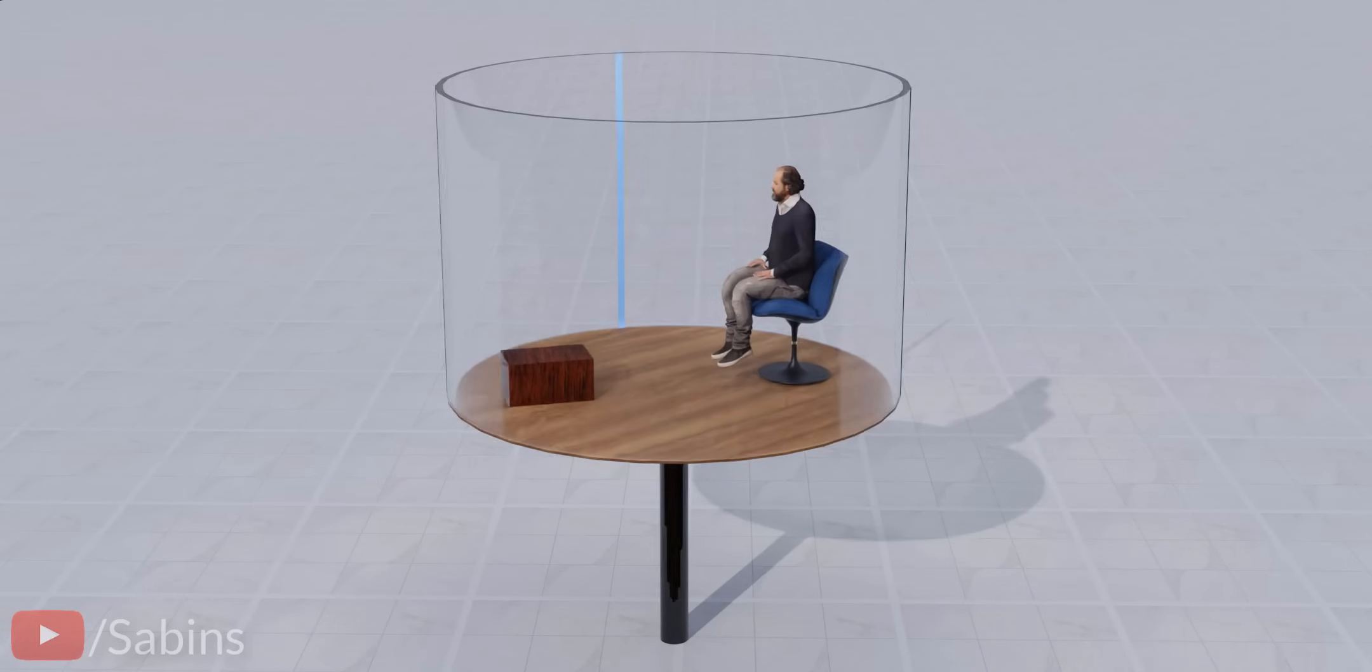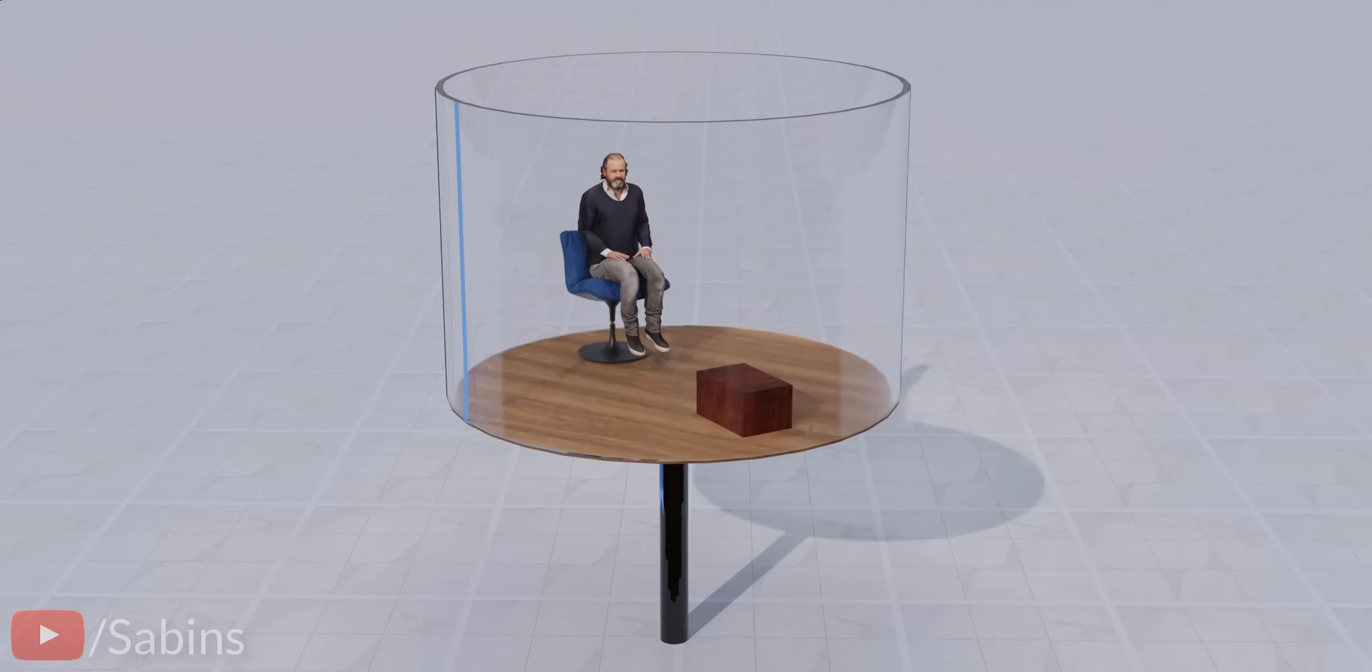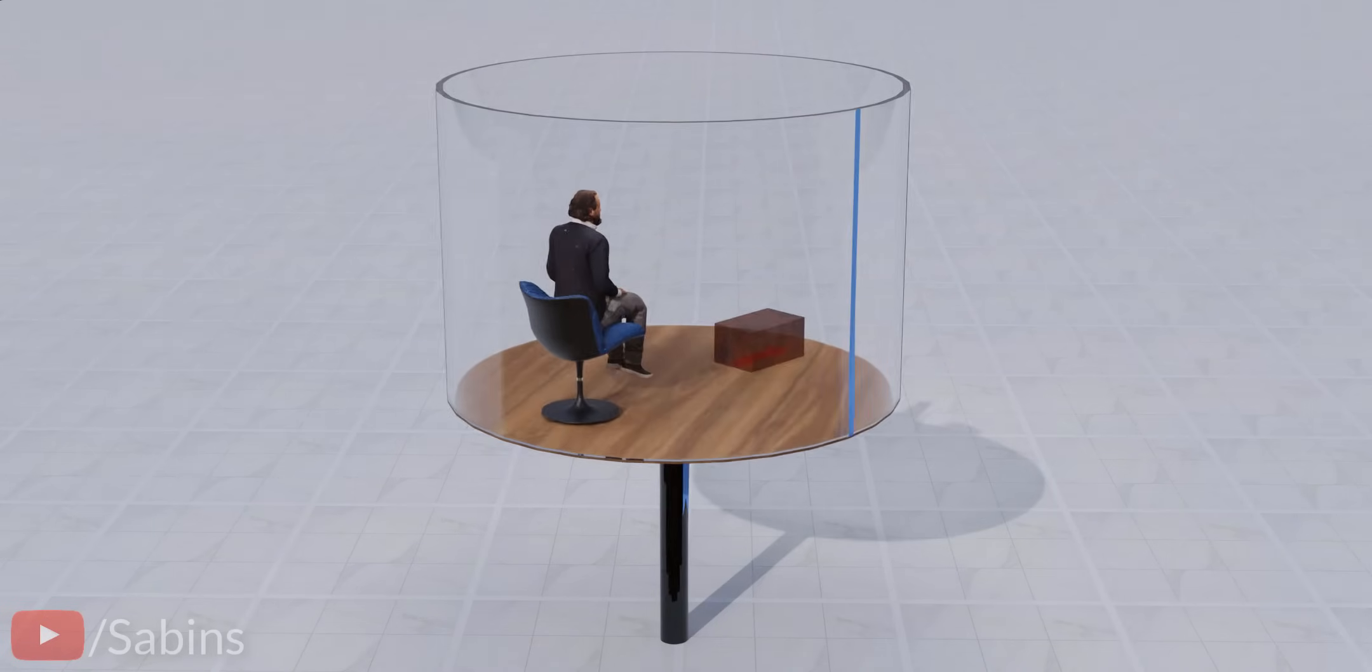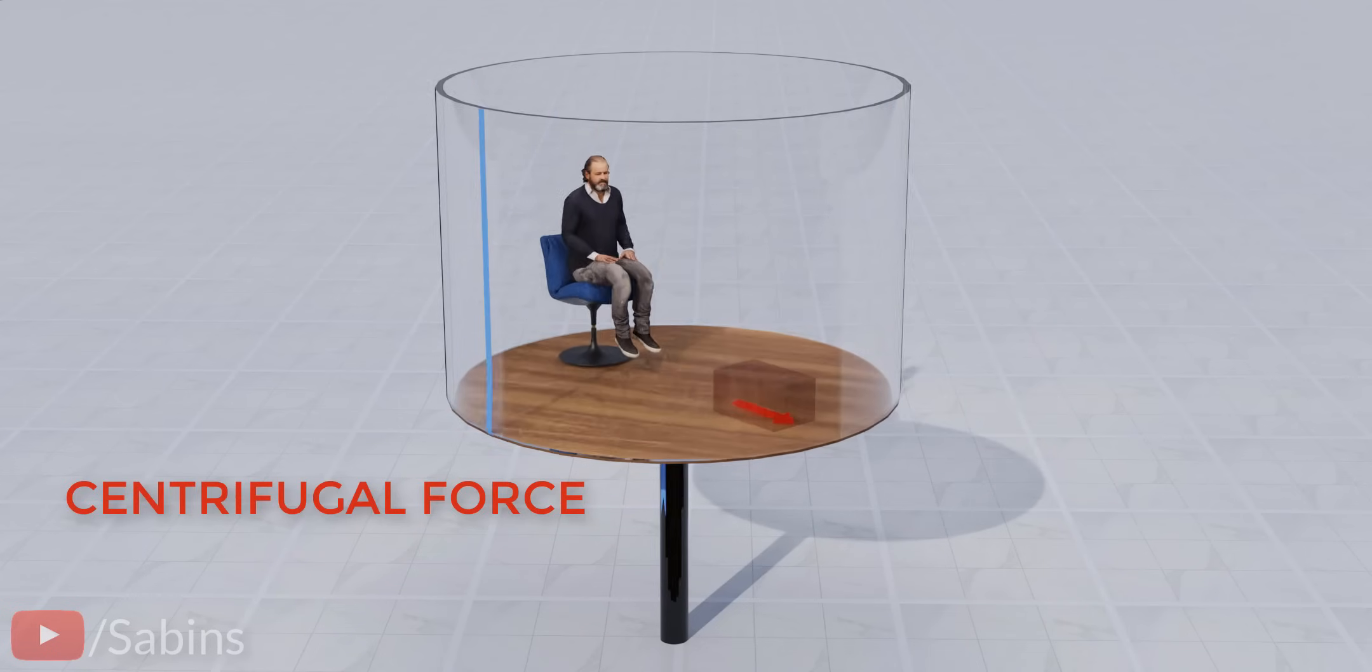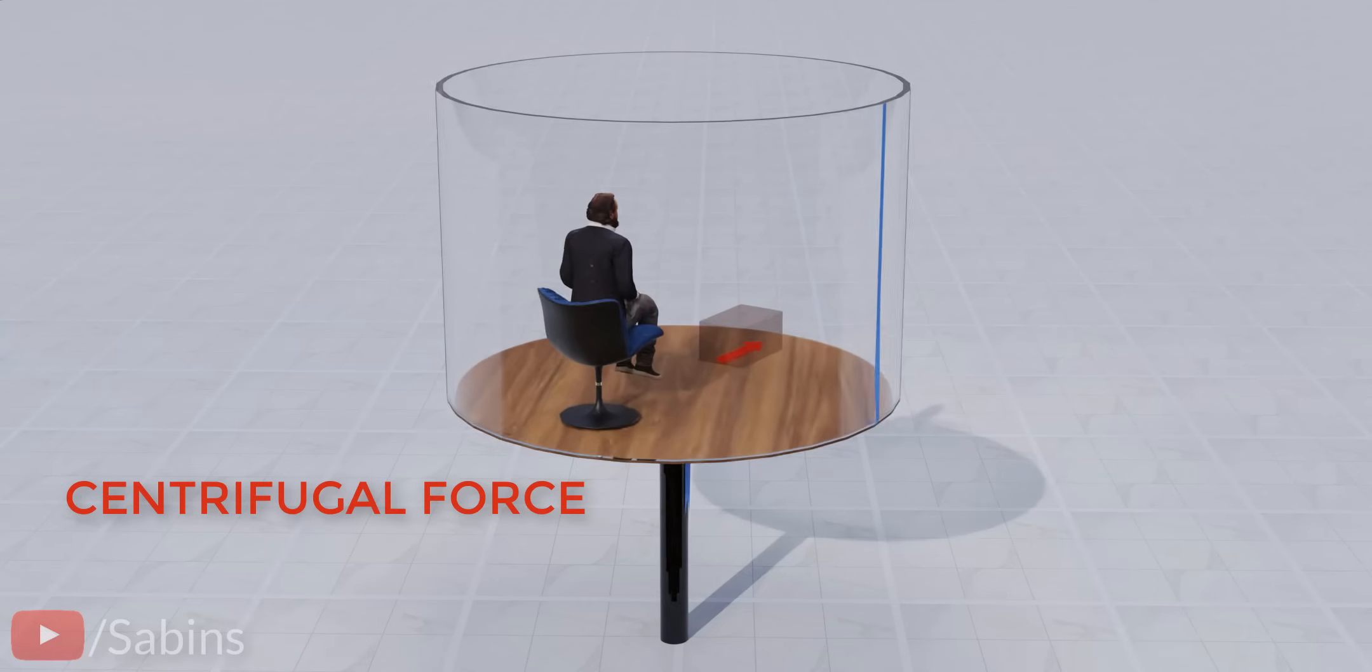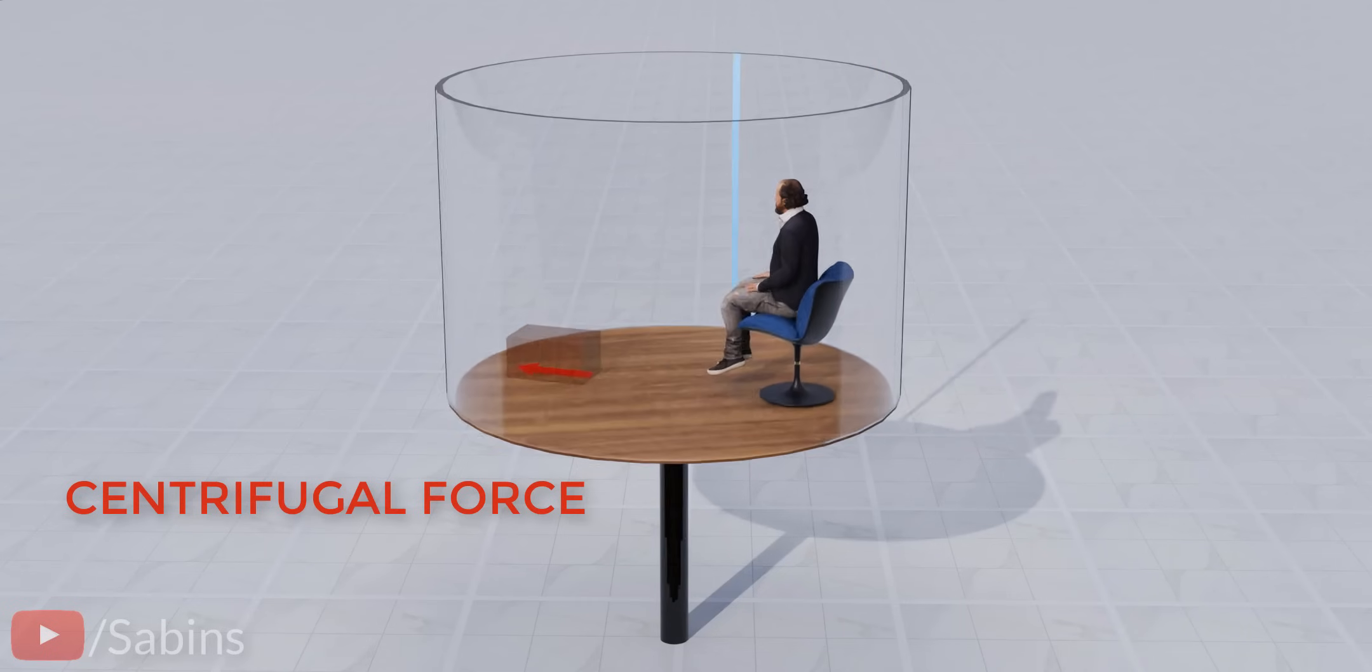Centrifugal force is needed in physics only when you analyze the problem rotating along with the object. In this example, since the observer is sitting inside a rotating cabin, the observer has to add a centrifugal force to analyze the problem. It's a pseudo-force added to convert a non-inertial frame of reference to an inertial frame of reference.